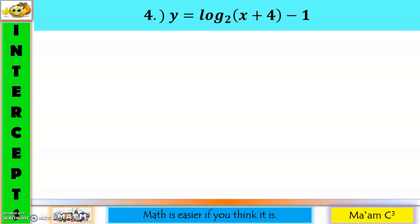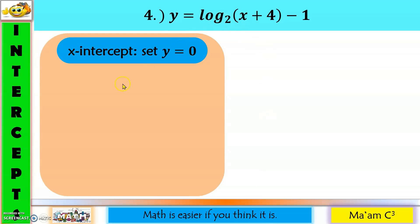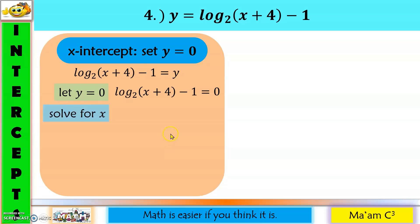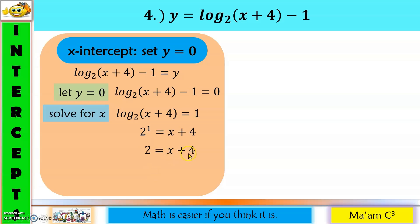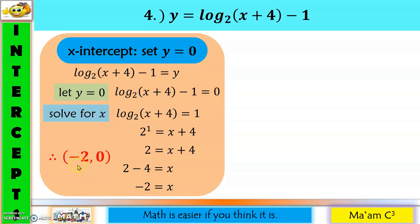Fourth example: y equals the logarithm of (x plus 4) to the base 2 minus 1. For the x-intercept, set y equal to zero, move negative 1 to the other side, then convert to exponential form: 2 raised to 1 equals x plus 4. Since 2 to the 1st is 2, we get 2 minus 4 equals x, so x equals negative 2. The x-intercept is (−2, 0), and negative 2 is the zero of the function.